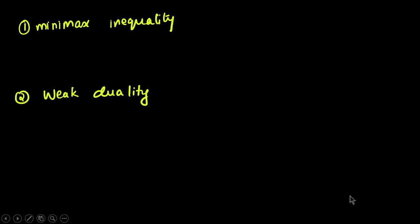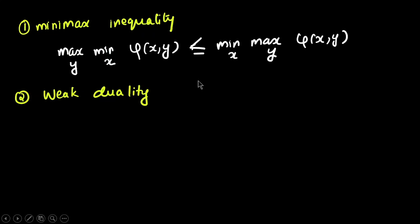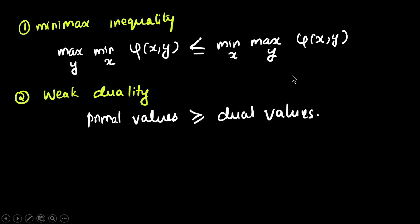There are two types of properties: minimax inequality and weak duality. The minimax inequality states that max_y min_x ψ(x,y) is less than or equal to min_x max_y ψ(x,y). Weak duality says that the primal value should be greater than or equal to the dual value.